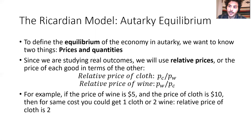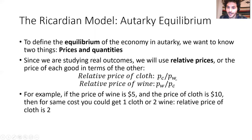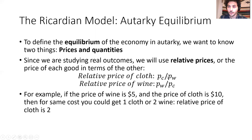In the domestic equilibrium, we care about prices and quantities. Since we're studying real outcomes, we focus on relative prices—the price of each good in terms of the other. The relative price of cloth is PC/PW and the relative price of wine is PW/PC. For example, if wine is $5 and cloth is $10, the relative price of cloth is 2. We don't need to pin down exact price levels, but we can pin down relative prices.